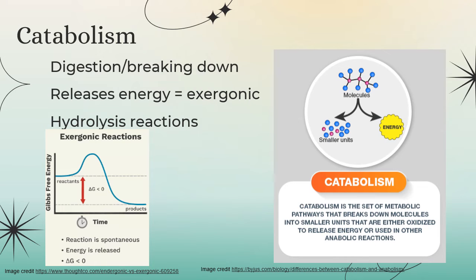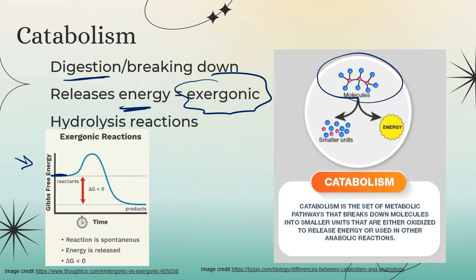Catabolism is when we take those big food molecules and digest or break them down into smaller pieces. When these big molecules are broken down, energy is released — we call this an exergonic reaction. The potential energy profile diagram shows that the reactants have energy stored in chemical bonds; we add a little energy to start the process, and then a lot of energy is released. Going from polymer to monomer is catabolism, and the chemical reactions that make this happen are called hydrolysis reactions.